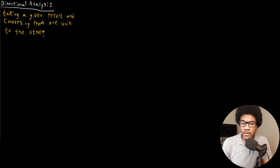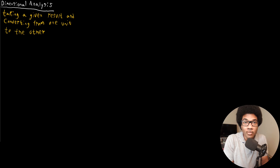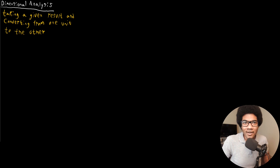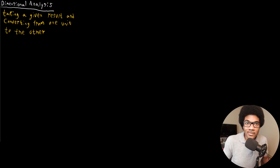In the introductory video I talked about chemistry being a bridge between the microscopic and the macroscopic. One reason we use dimensional analysis is we may have a macroscopic sample — say a certain number of grams — and as chemists we want microscopic explanations, like how many atoms are in that sample. So there's going to have to be a conversion from grams to atoms.